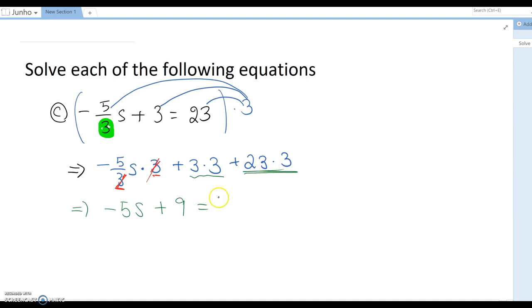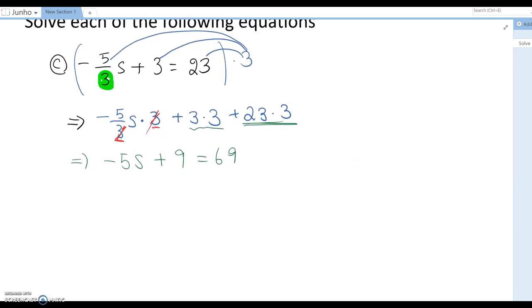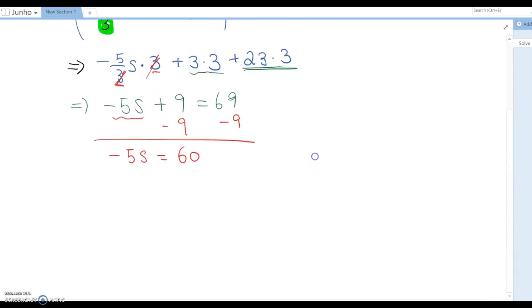So next step, you just subtract 9 so we can isolate the variable term here. This becomes negative 5s equals 60. So last step, you divide by negative 5.